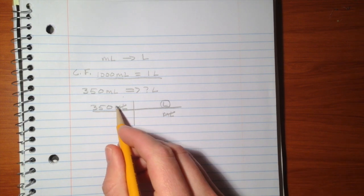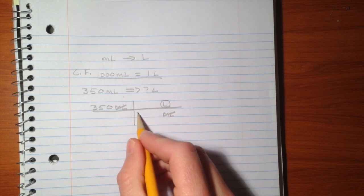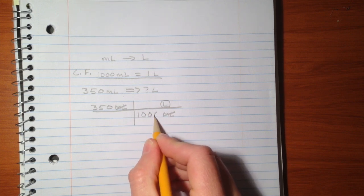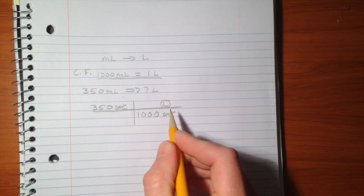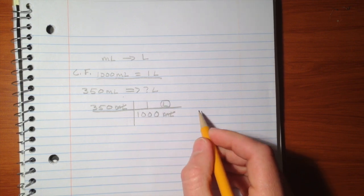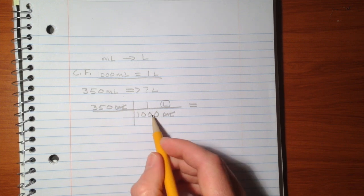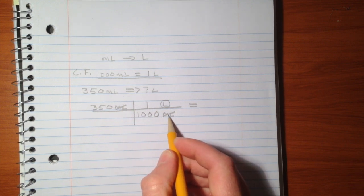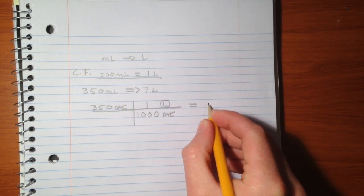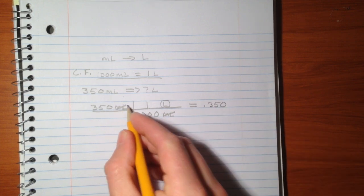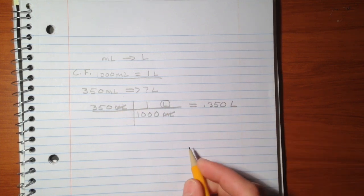To go from 350 milliliters to liters, we use this conversion factor. 1,000 milliliters equals one liter. 350 milliliters divided by 1,000 milliliters is 0.350. These units did cancel, and we're left with liters.